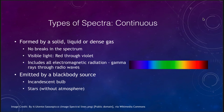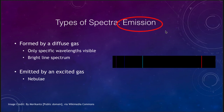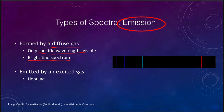Another type we can see is an emission spectrum, which is formed by a diffuse gas. Dense gases give us a continuous spectrum; a diffuse gas gives us an emission spectrum. In an emission spectrum, sometimes called a bright line spectrum, we only see specific wavelengths. Looking at hydrogen as an example, we see a line in the red, one in the blue, one in the deeper blue, and one into the violet — very clean compared to the continuous spectrum where all wavelengths are visible.